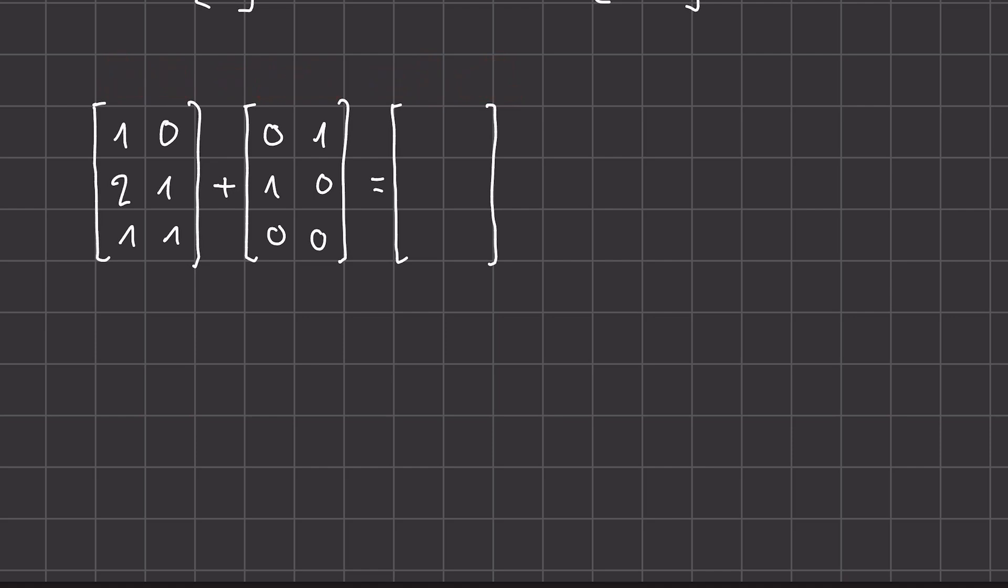Like vectors, the output entry will just be the addition of each of the entries in the inputs. So in this case, we call this the entry in the first column and first row. This will be added to the entry in the first column in the first row of the second matrix. So one plus zero. And then we enter this result in the first column and first row of the output. So one plus zero is one and we get one. Now we continue this for each of the entries. And then this is our output matrix.